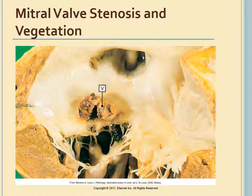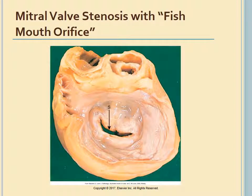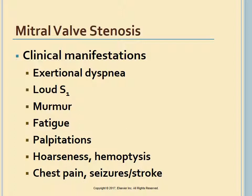The stenotic mitral valve takes on a fish mouth shape because of the thickening and shortening of the mitral valve structures. The primary symptom of mitral stenosis is exertional difficulty breathing due to reduced lung compliance. Heart sounds include a loud first heart sound and a low-pitched diastolic murmur, best heard at the apex with the stethoscope.